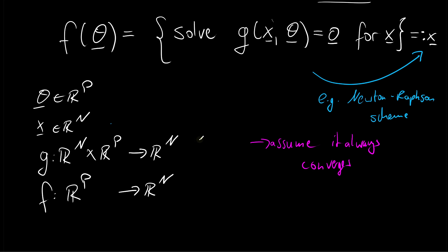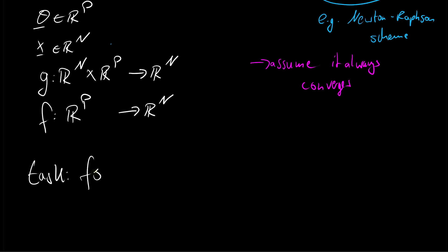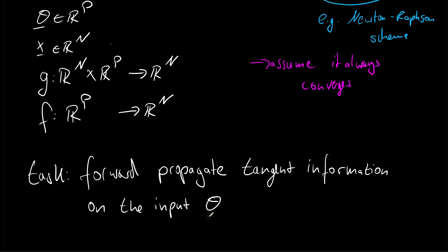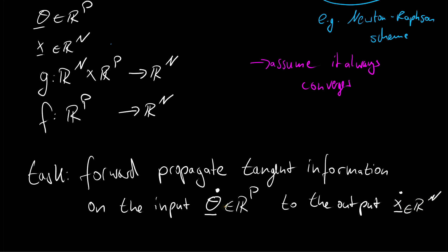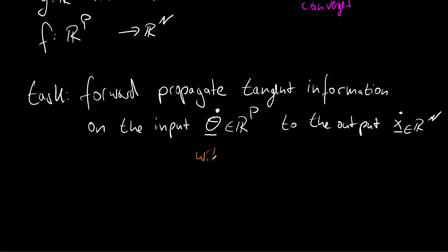Now we are interested in forward propagating tangent information. We have this operation as part of a computational chain on which we want to apply forward mode automatic differentiation, and we need to propagate tangent information. The task is to forward propagate tangent information on the input — we denote the input tangent as theta_dot, which is another p-dimensional vector — to the output x_dot, which is an n-dimensional vector. Importantly, we want to do so without calling a forward mode AD engine through the numerical solver.